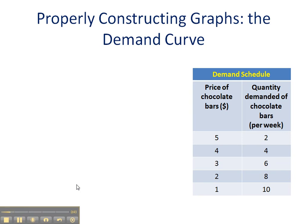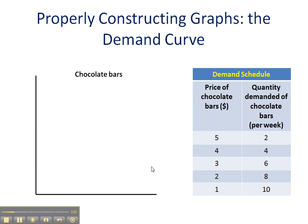We're starting here with a demand schedule, which you've seen before. In this case we're taking a look at the price of chocolate bars and the quantity demanded of chocolate bars. We're going to construct our vertical and horizontal axes and give our market a heading — in this case we're looking at the chocolate bar market. Always make sure that your graphs have a proper heading. In microeconomics you have to make sure that the market is clearly distinguished.